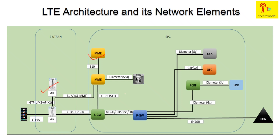The HSS is essentially a storage or database that holds subscriber identity and all related details. It contains centralized authentication functionality. The SGW's main function is routing and forwarding of user data packets. It also supports inter-RAT handover in the user plane and provides mobility between LTE and legacy networks such as 2G and 3G.